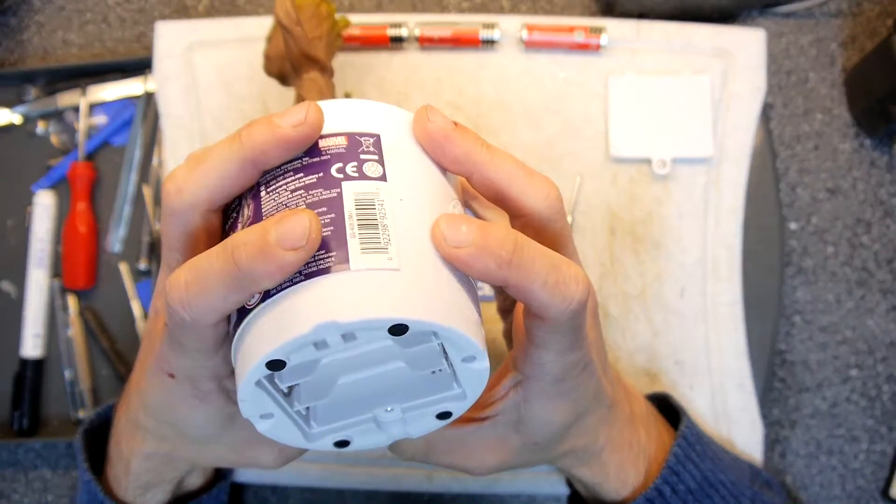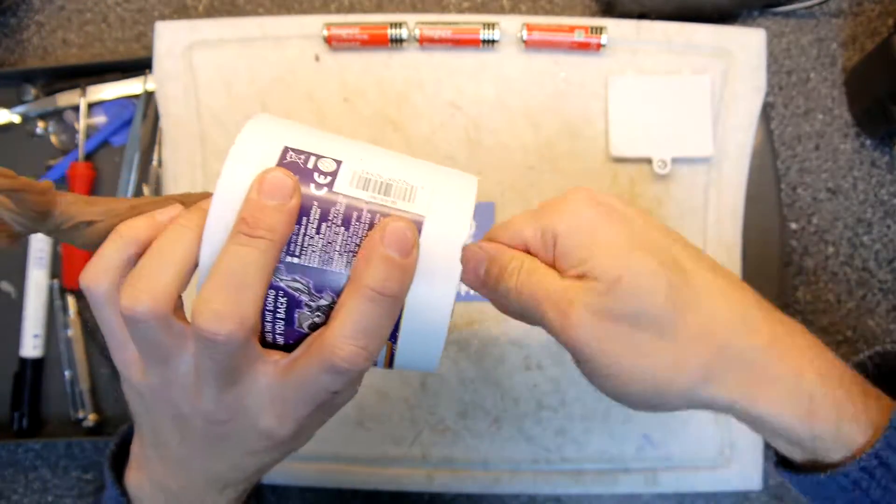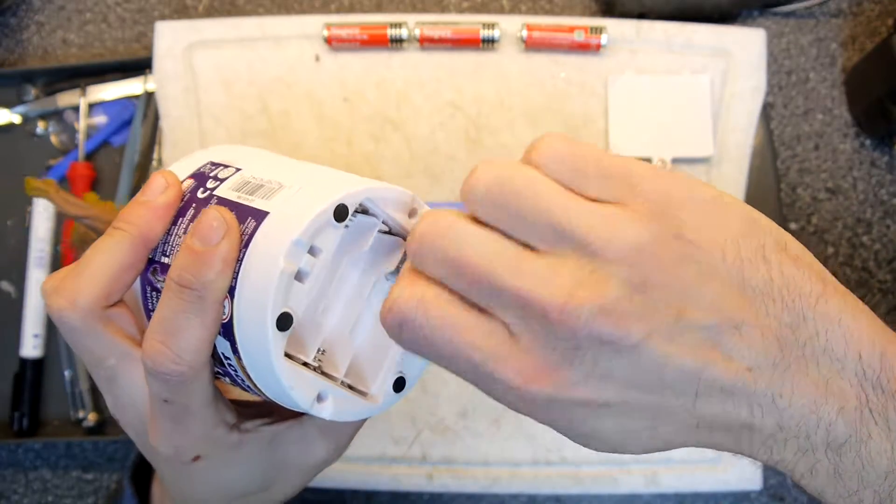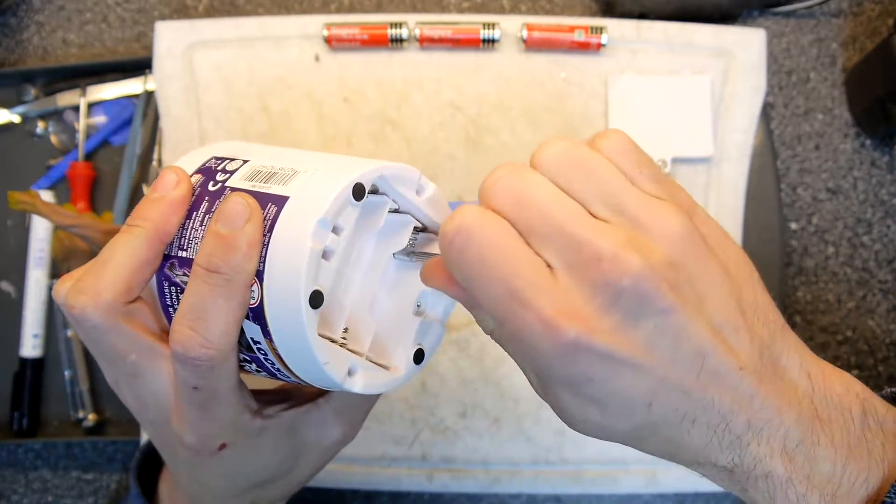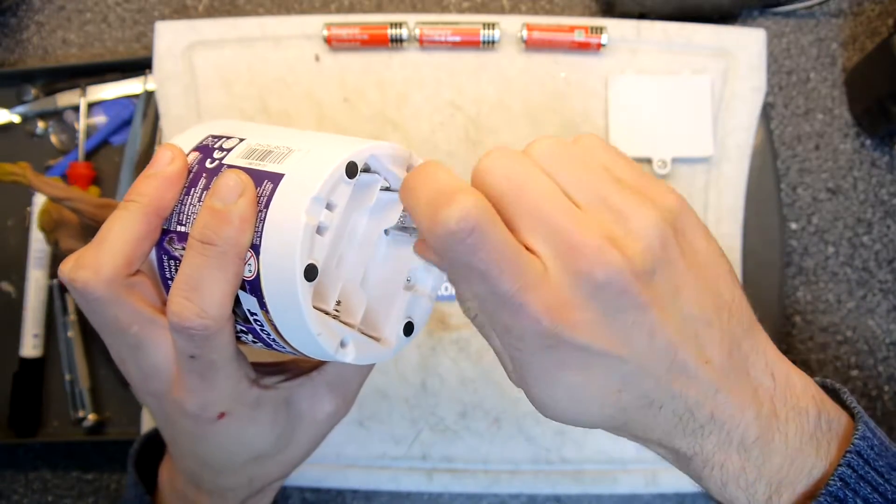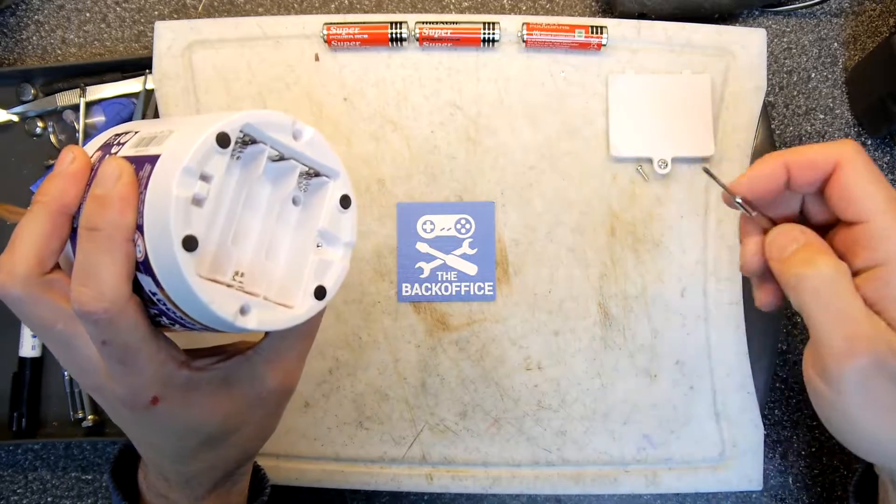So looking at the bottom, looks like two deep set screws. Annoyingly deep, actually. But not annoyingly tight. At least this first one isn't. It's a lot of torque again on a tiny baby screwdriver. I might have to upgrade to something with a thicker shaft. That's what she said.